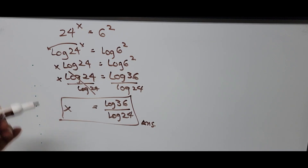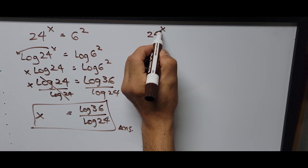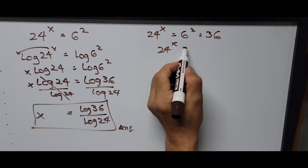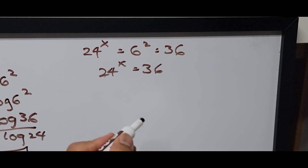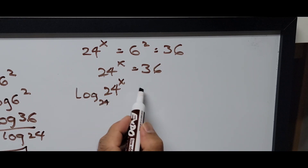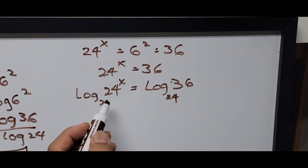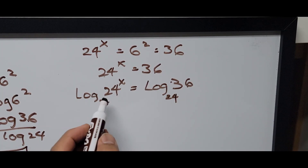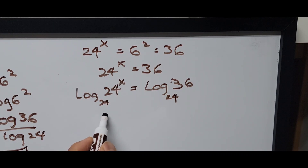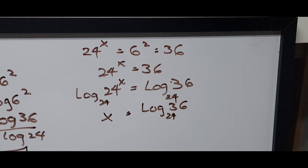There's another way to solve for x. From 24 raised to x equals 36, we take the logarithm base 24 of both sides: log base 24 of 24 raised to x equals log base 24 of 36. Since log base 24 of 24 cancels, we get x equals log base 24 of 36.